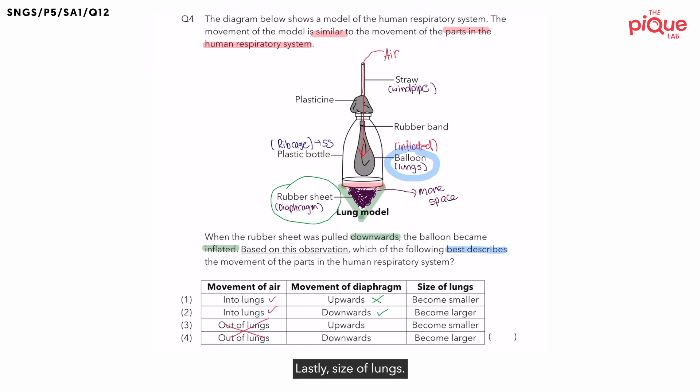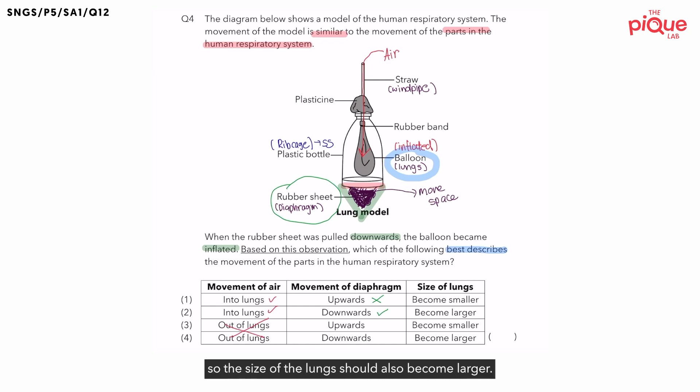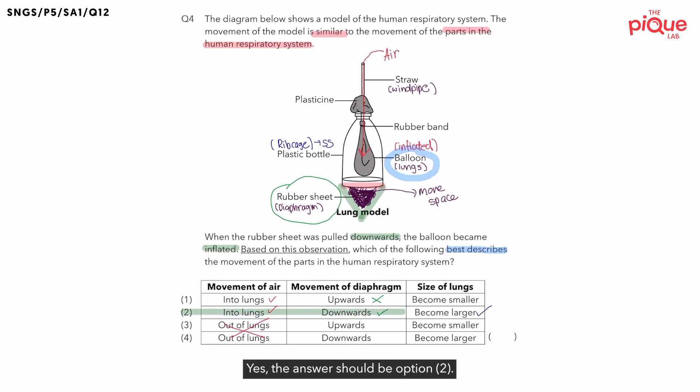Lastly, size of lungs. As we have already mentioned, the balloon represents the lungs. Did the balloon become larger or smaller? The balloon became larger. So the size of the lungs should also become larger. Have we found our answer? Yes. The answer should be option 2.